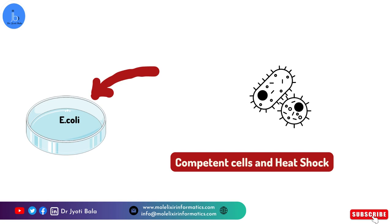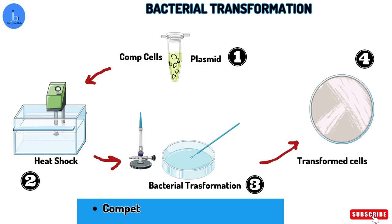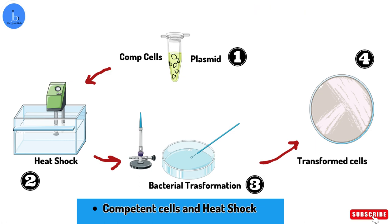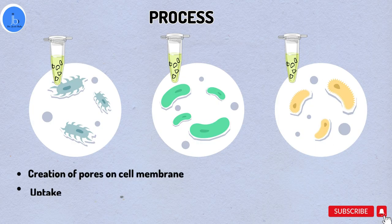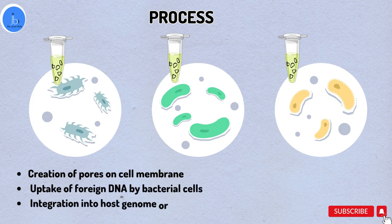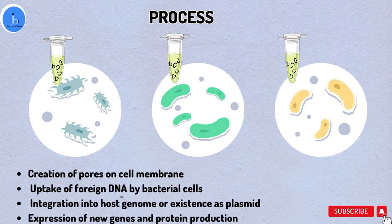Once the pores are open, the bacterial cells are exposed to the foreign DNA and some of them take up the DNA molecule. Once the foreign DNA is inside the bacterial cell, it integrates into the host genome or exists independently as a plasmid. The transformed bacteria can then express the new gene encoded by the foreign DNA, leading to the production of proteins with specific functions.